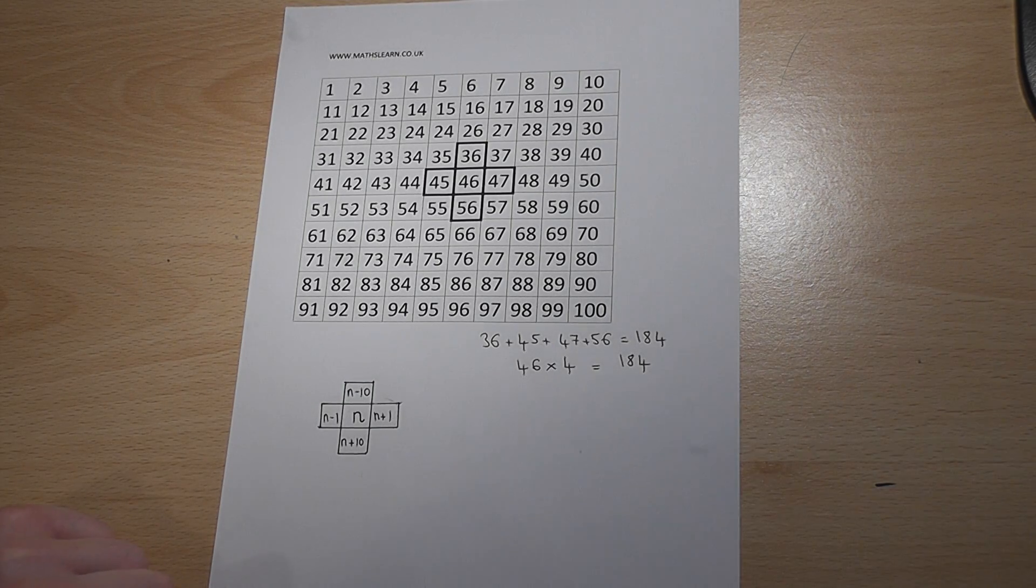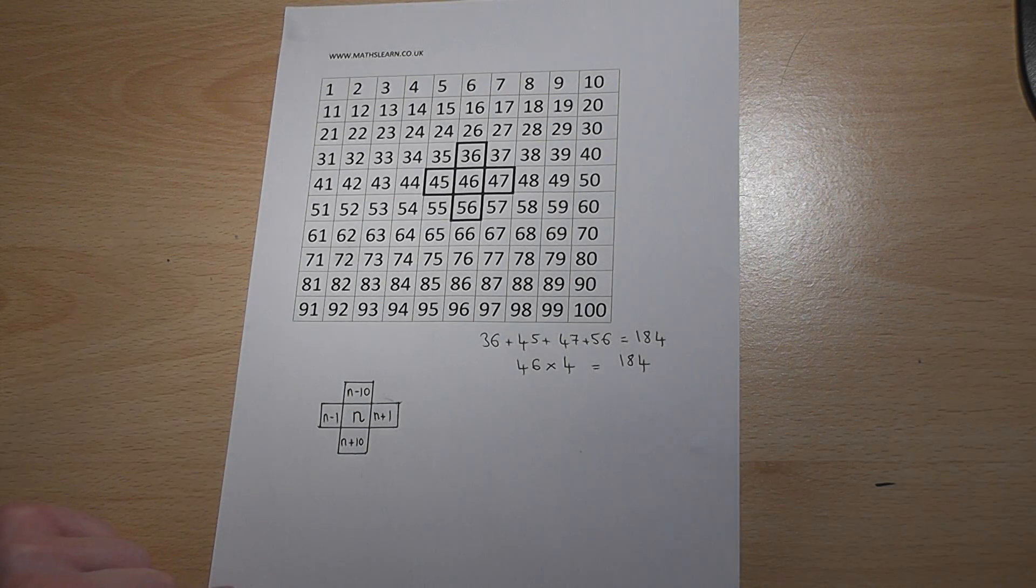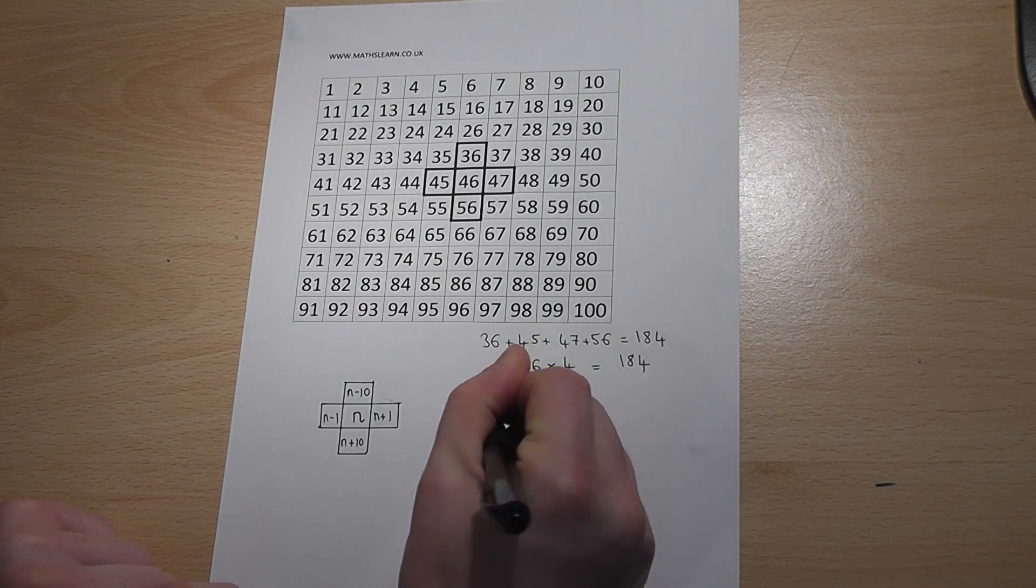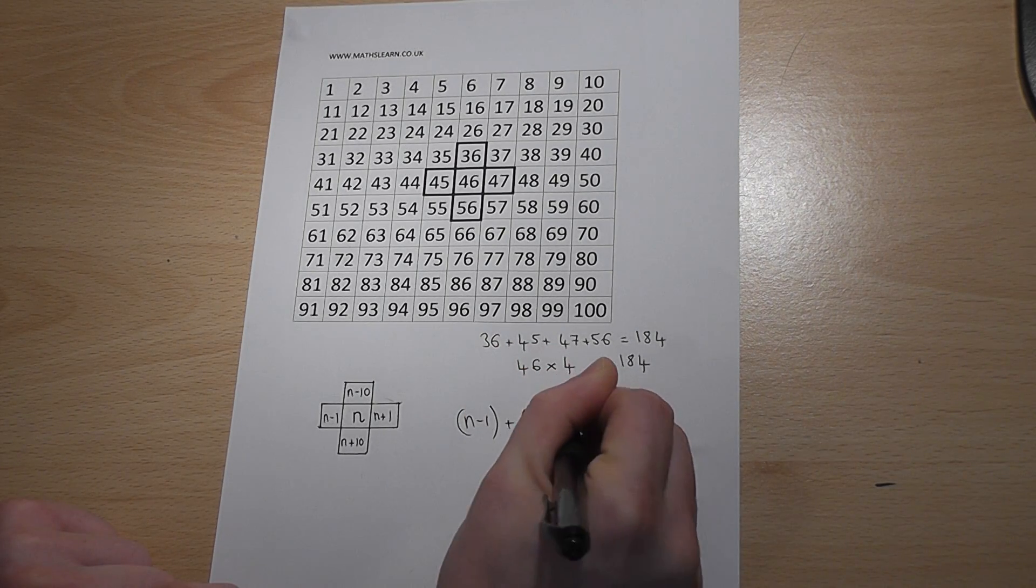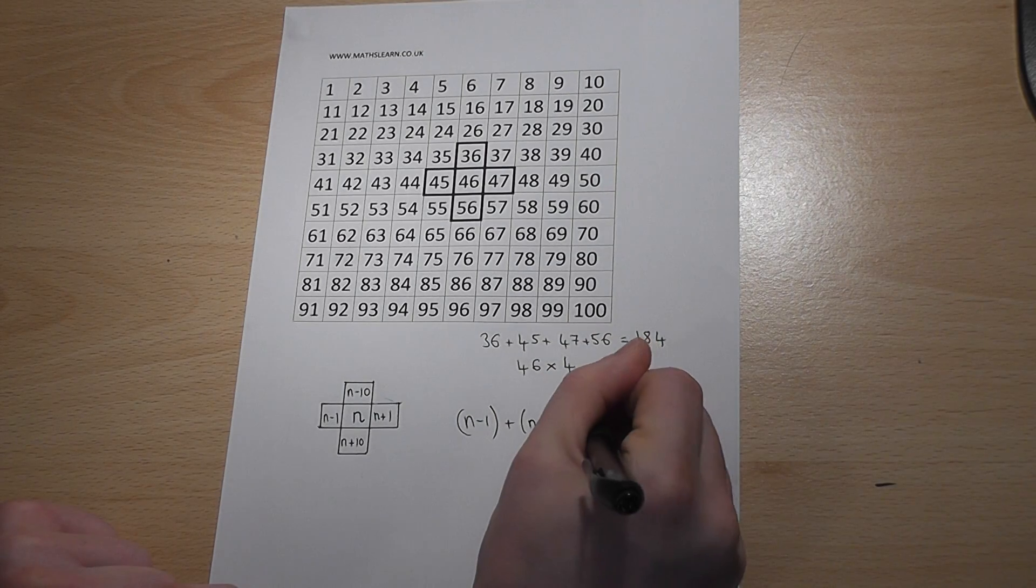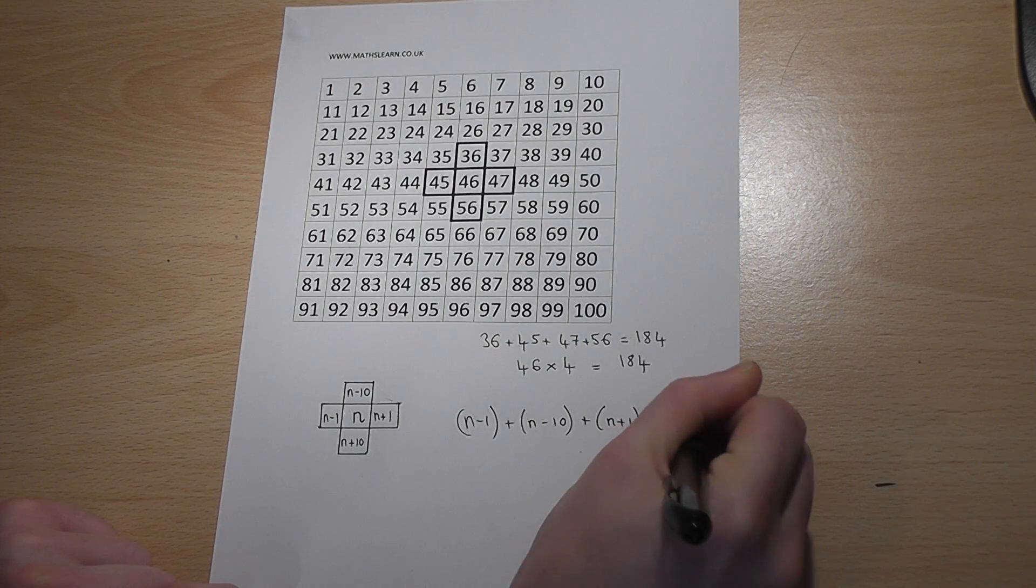Now if we add up these four outer algebraic answers, we have n minus 1, we have n minus 10, we have n plus 1, and n plus 10.